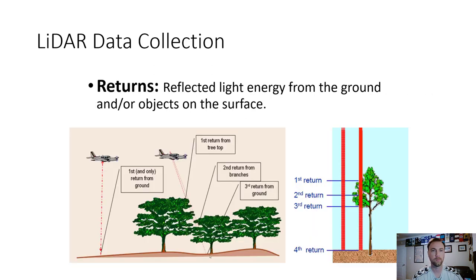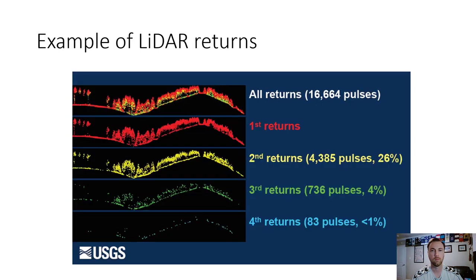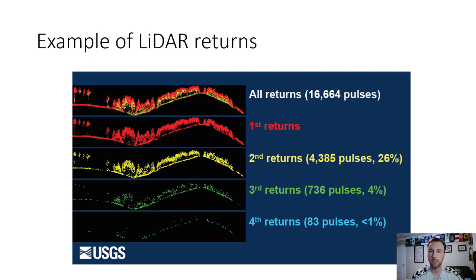Looking at a LiDAR returns example: all returns are shown at the top. Breaking it down — first returns are the tops of trees, second returns are the middle tier of the canopy, third returns might be shrubs beneath or tree stumps, and fourth returns would be the bare earth beneath. In terms of percentages: roughly 70% are first returns, 26% are second returns, 4% are third returns, and less than 1% are fourth returns.